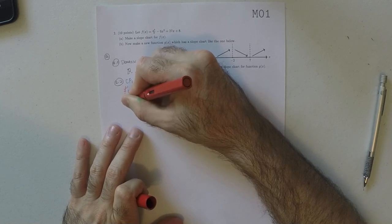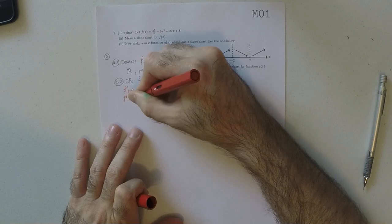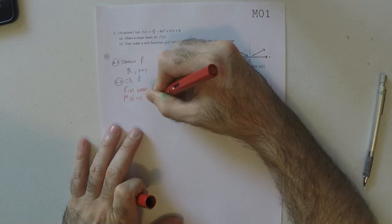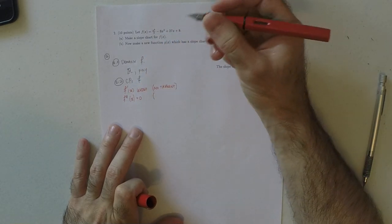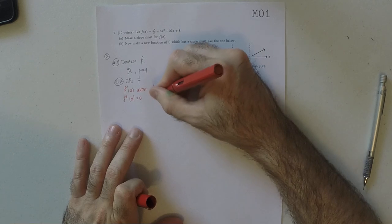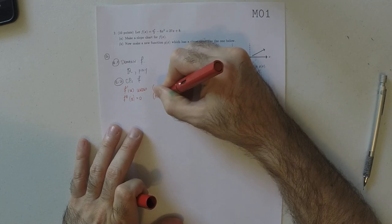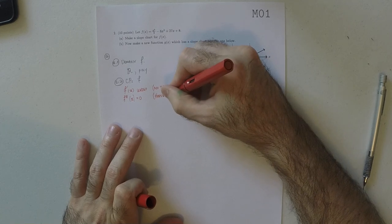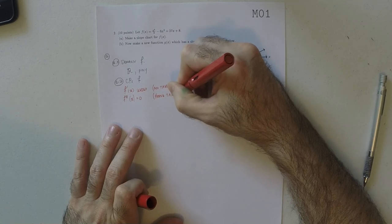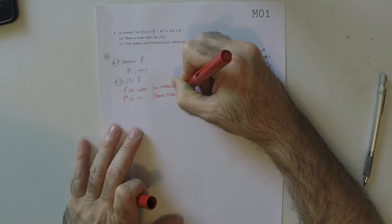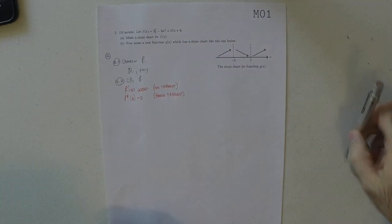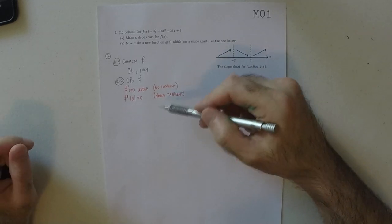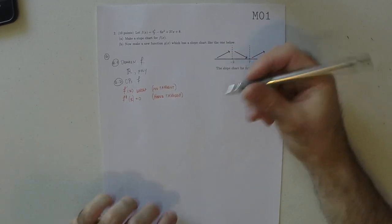And then another possibility is that the derivative is zero. And again, from the point of view of geometry, that means that there's a horizontal tangent. So there is a tangent, and moreover, it's horizontal. So to find the critical points, in any case, we need to find the derivative.